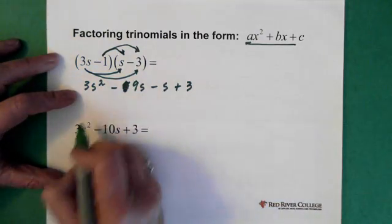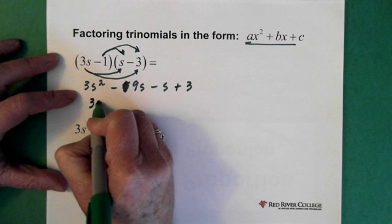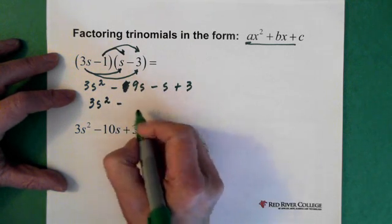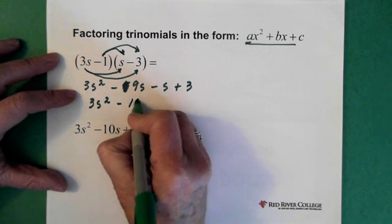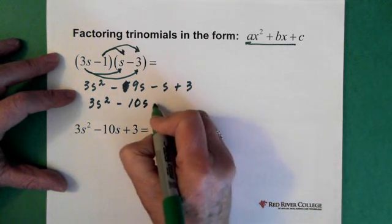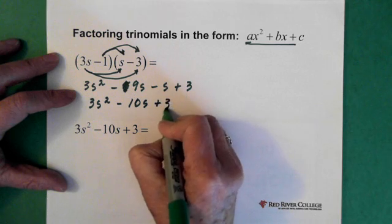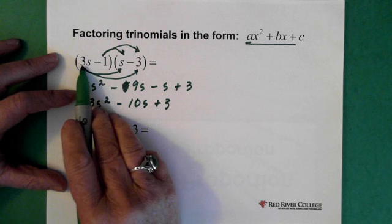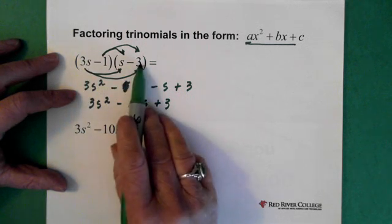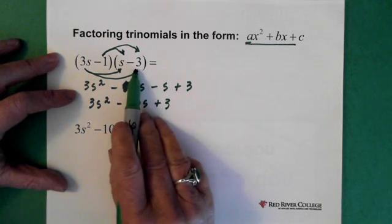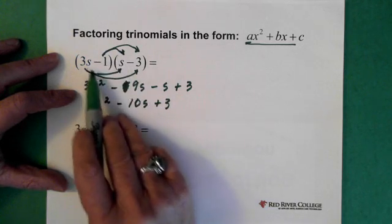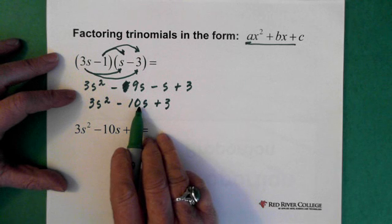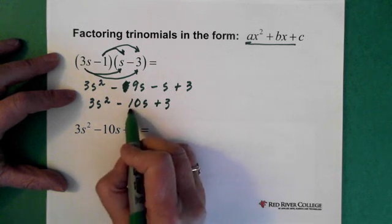So we just add these together, and we have 3s squared minus 9s minus s, which is minus 10s, and then plus 3. Noticing that the outer and the inner multiply together to get your middle term.